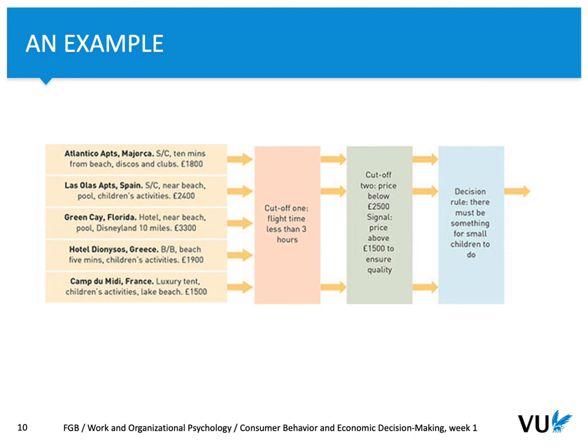Then you look at your wallet and think: how much money can I spend on these holidays? Maybe something between $1,500 and $2,500 would be fine. And then a final decision rule: something for small children. If, for example, you would go to Mallorca, you'd check whether they offer something appropriate for children. If that would be the case, probably you would go there.